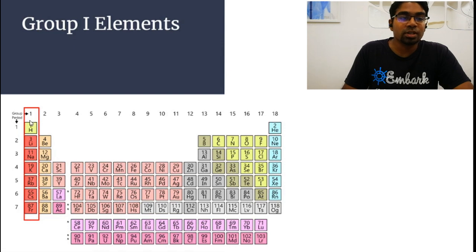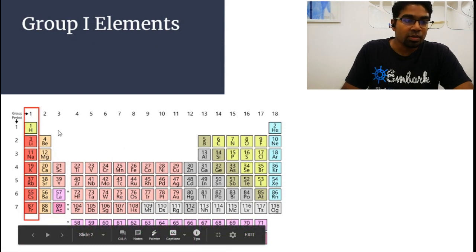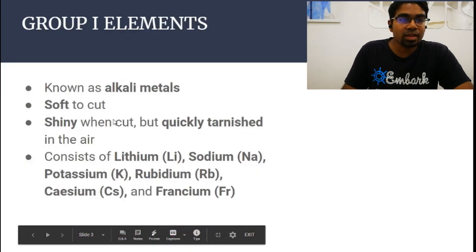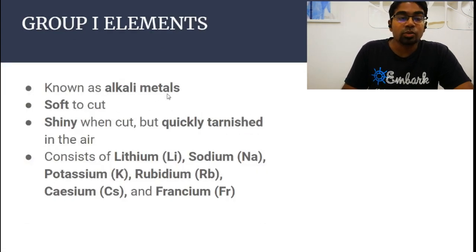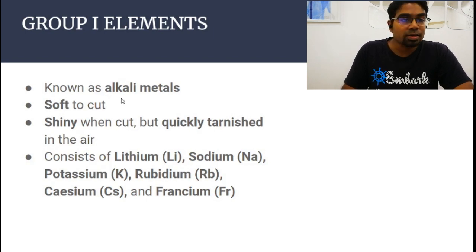Hydrogen is the odd one out. Its behavior is different from the other elements in group 1. When we refer to group 1 elements, we are referring to lithium to francium. They are known as the alkali metals. Group 1 elements are called the alkali metals. Remember, group 18 elements are called the noble gases.